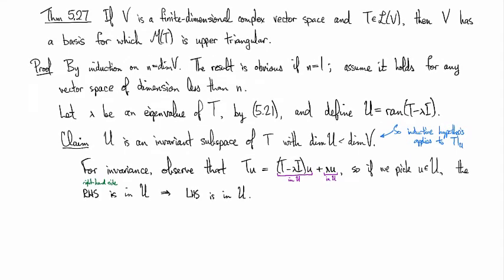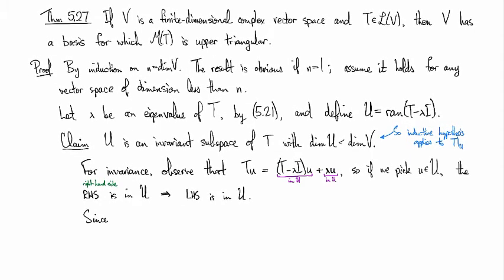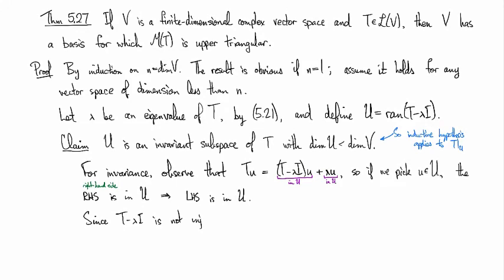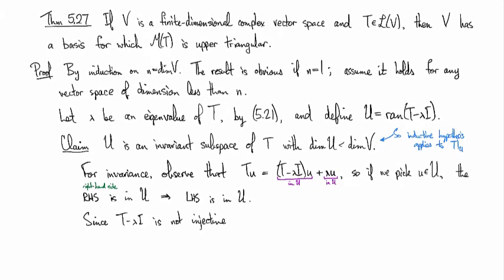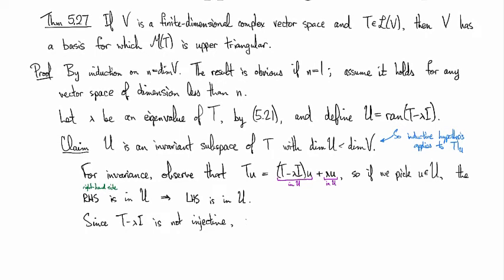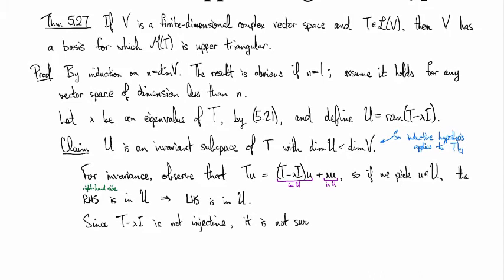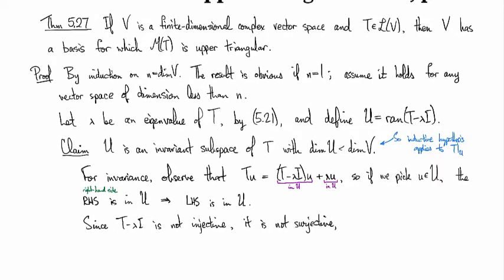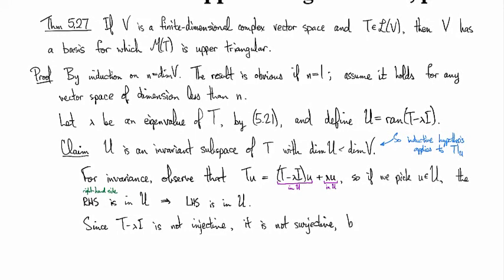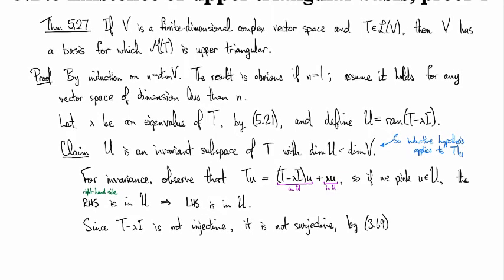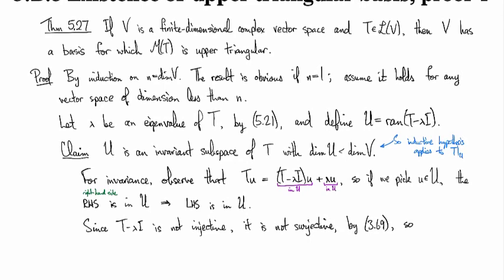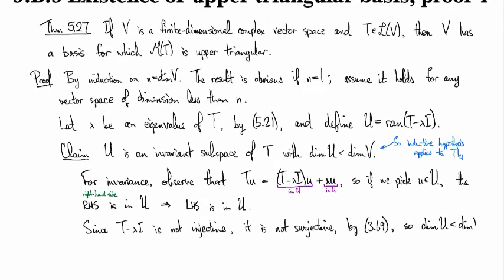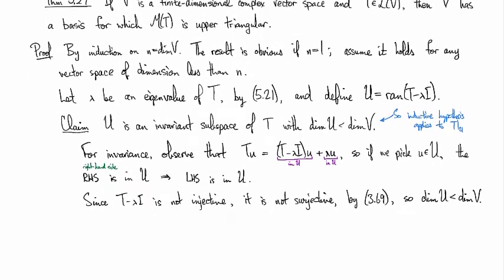And then, since T minus lambda I is not injective because we took lambda to be an eigenvalue, then it is also not surjective, because we're dealing with operators. And we know that for operators, you're injective if and only if you're surjective, if and only if you're invertible. And that was the content of 3.69. So since we're not surjective, the dimension of the range has to be strictly less than the dimension of the whole space. Okay, that gives us our claim.